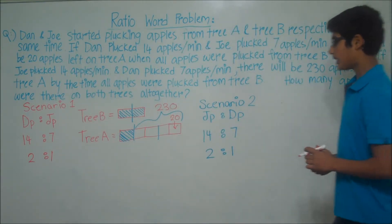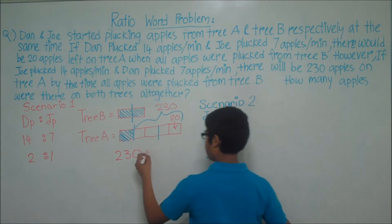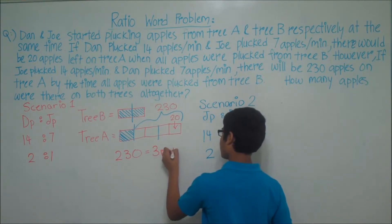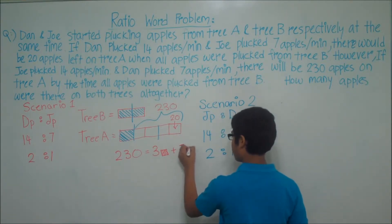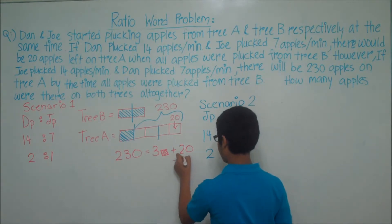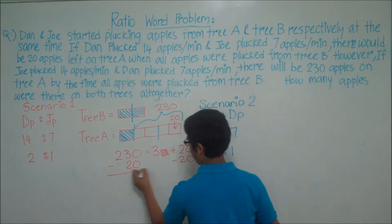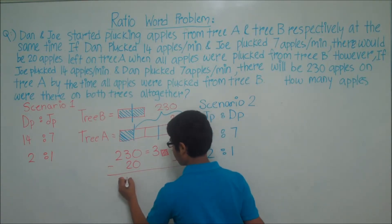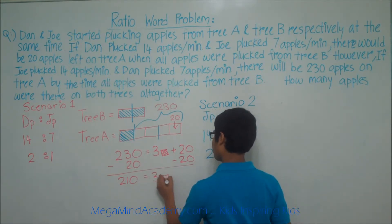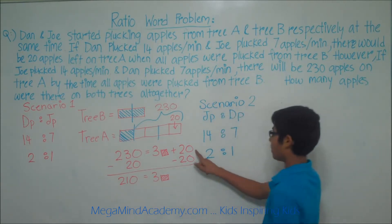We can see that 230 is equal to 3 boxes plus an extra 20 apples. Let's get the boxes on one side and the apples on the other side. To do this, we subtract 20 from both sides of the equation, which gets rid of the 20 on the right side. So 230 minus 20 equals 210, which equals 3 boxes. The plus 20 minus 20 cancels out.